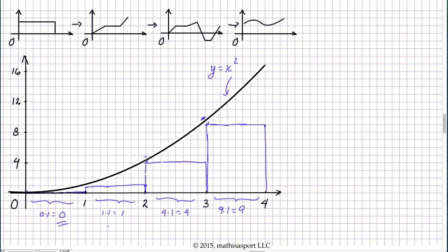So these are the areas of the 4 rectangles that we've constructed. And so our approximation is going to equal 0 plus 1 plus 4 plus 9, or approximate area of 14.